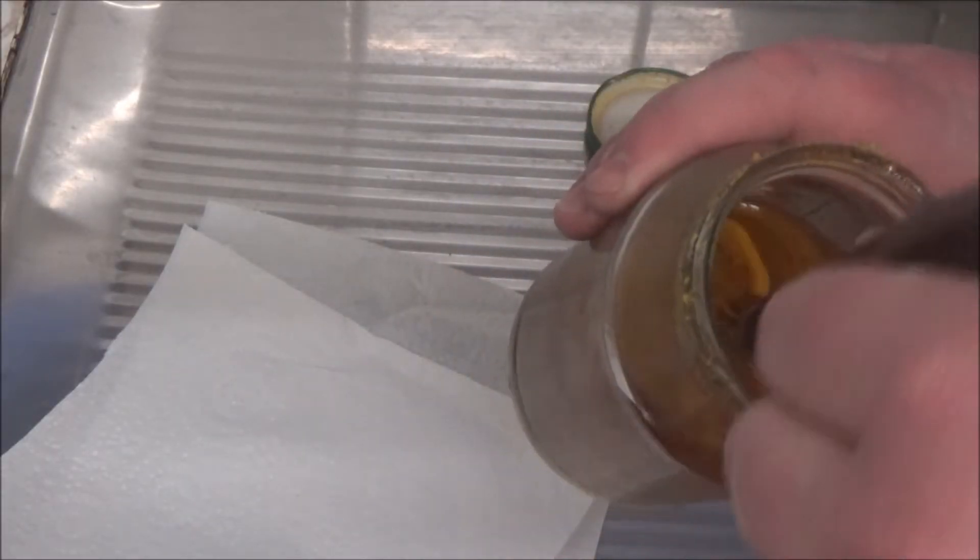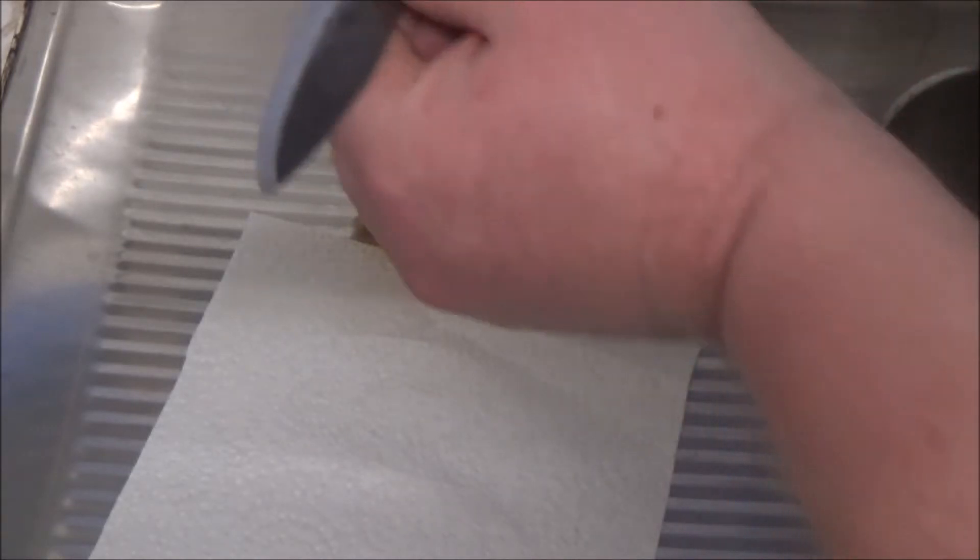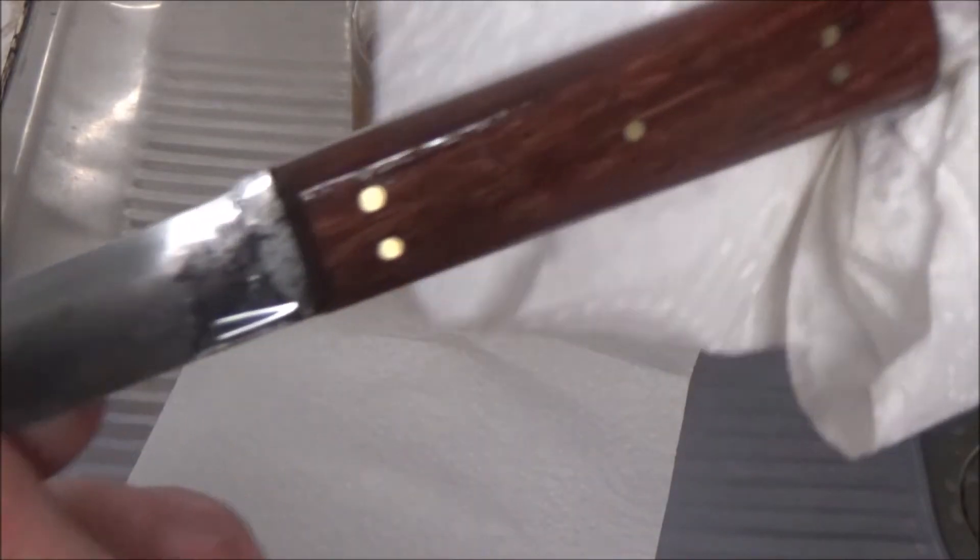Then I let it soak in a 50-50 mix of boiled linseed oil and turps overnight, and I believe it came out pretty good in the end. I love the look of the oil going on the wood.